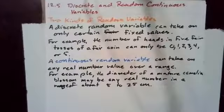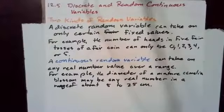For example, the number of heads in five fair tosses of a fair coin can only be 0, 1, 2, 3, 4, or 5.